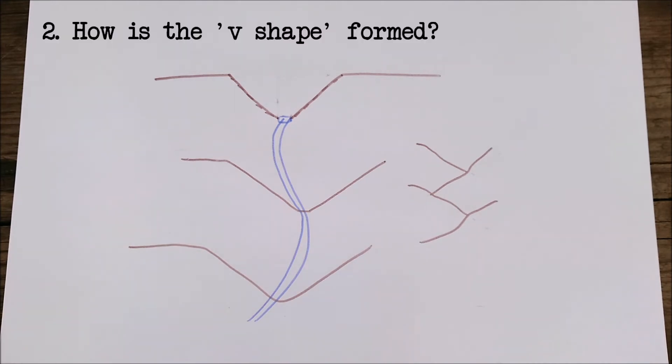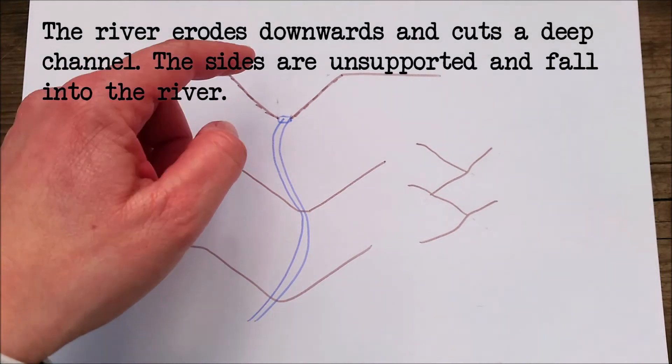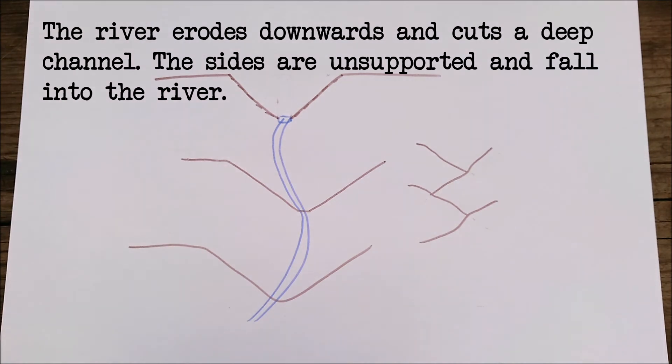Question two: How is the V-shape formed? Well, the V-shape is formed because the river eroding downwards cuts a channel for itself, a deep channel. And the sides of that channel aren't really being supported by anything. So processes of weathering and erosion make those channel sides fall into the river, and that material gets carried away.